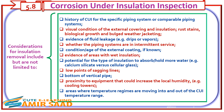Additional considerations include: evidence of areas with wet insulation; potential for the type of insulation to absorb and hold more water, for example calcium silicate versus cellular glass; low points of sagging lines; bottom of vertical pipe; proximity to equipment that could increase local humidity, for example cooling towers; and areas where temperature regimes are moving into and out of the CUI temperature range.